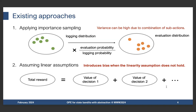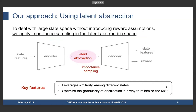To deal with the challenges of existing approaches — especially the large action space of slate recommendation without introducing restrictive assumptions — our approach introduces latent abstraction and applies importance sampling on the latent abstraction space, which is typically much smaller than the combinatorial slate action space. We input a slate feature into an encoder to get the latent abstraction of the slate, and apply importance sampling on it. By doing so, we can leverage similarity among different slates by learning effective latent abstractions, significantly reducing the variance of importance sampling while maintaining small bias.